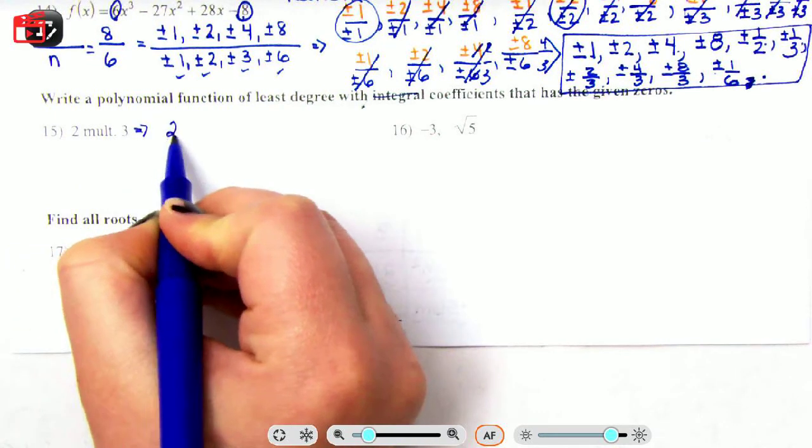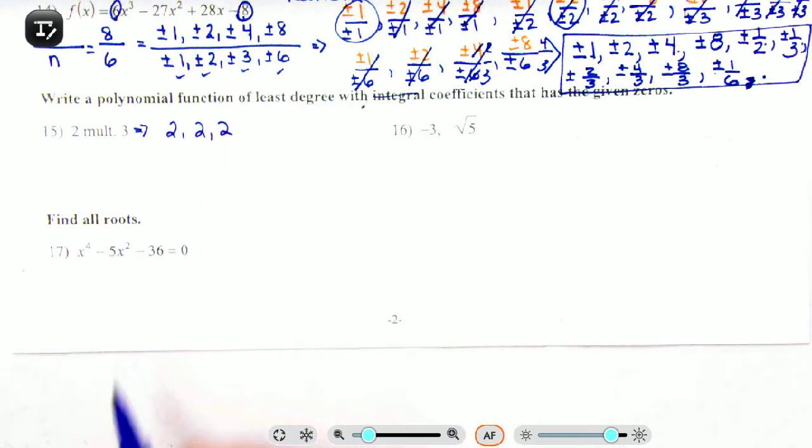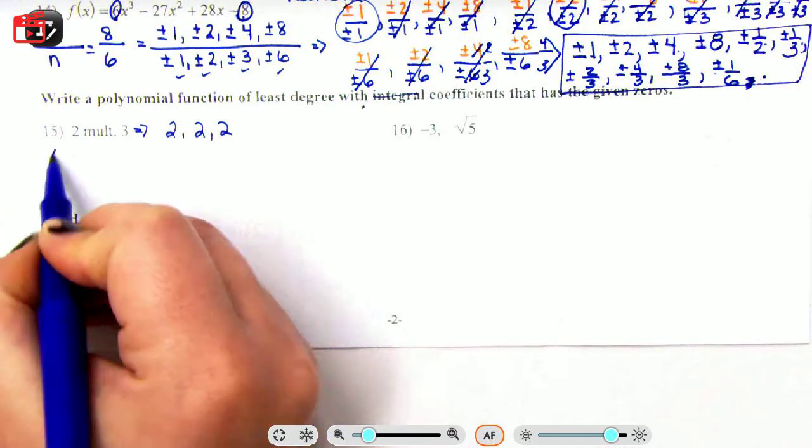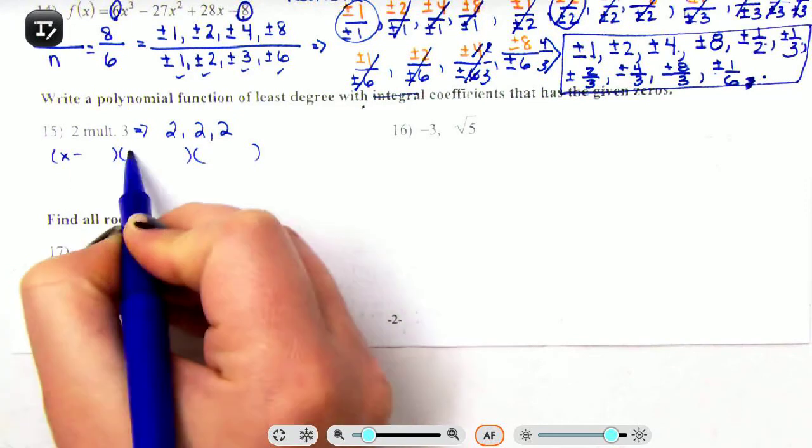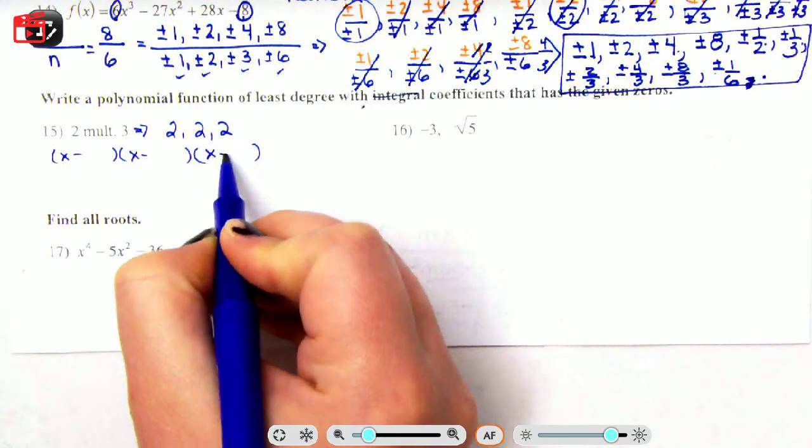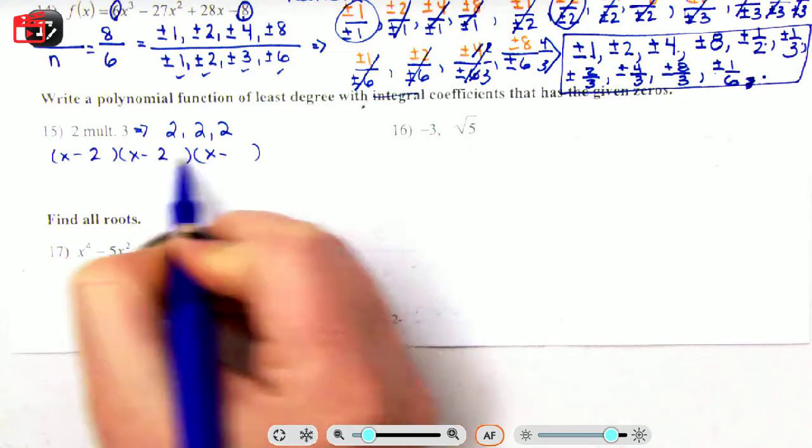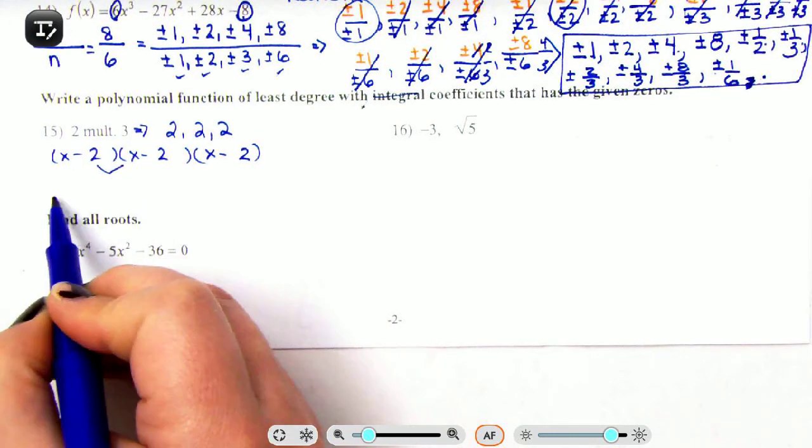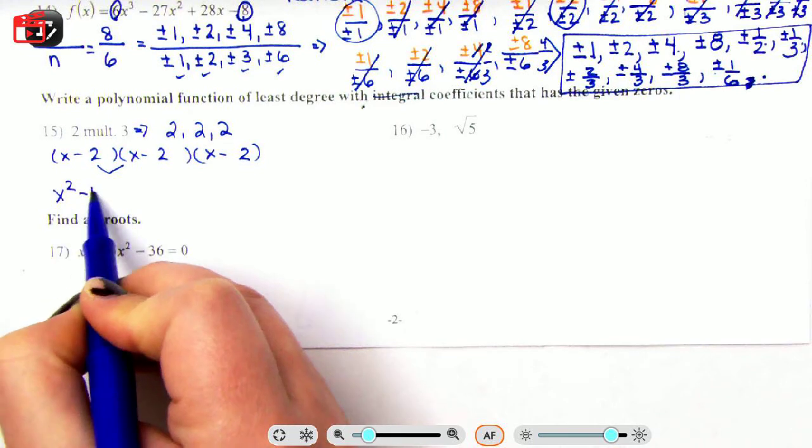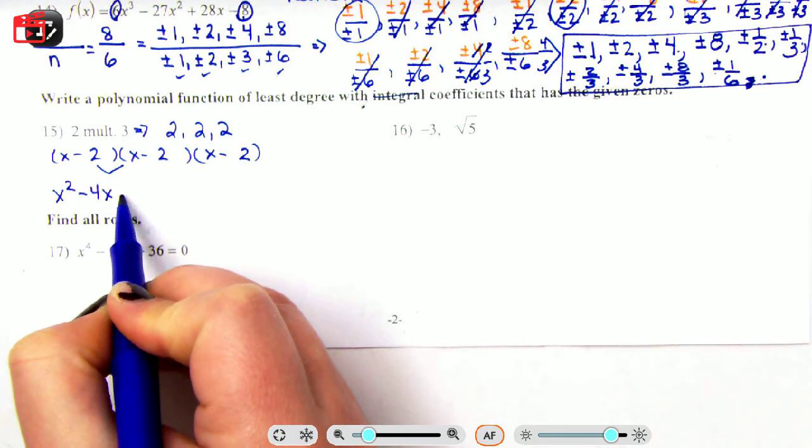That means you have two three times. So when you're starting to write your polynomial, you're doing (x - 2) three times. Okay, so when you're multiplying this out, I'm just gonna FOIL real quick: x² - 4x + 4.